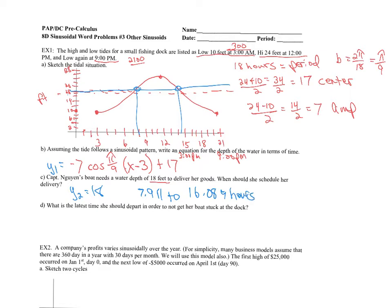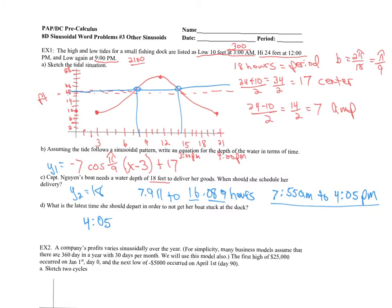If I take 0.911 times 60, because there are 60 minutes in an hour, that means at 7:55 a.m. the tide has gone up enough to be able to deliver goods. And 16 minus 12 means at 4-something p.m. — 0.089 times 60 tells me at 4:05 p.m. the tide is starting to go out — but between those two times they'll be able to bring goods in. So 4:05 p.m. is the latest time the captain should depart in order to not get the boat stuck at the dock.